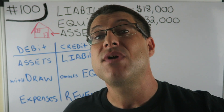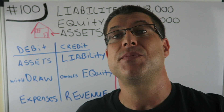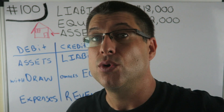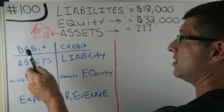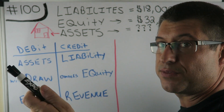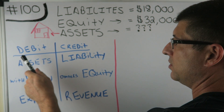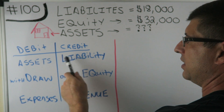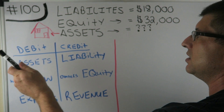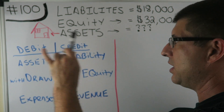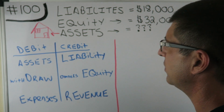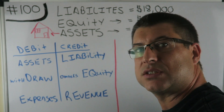But you have been writing DC Adler on your paper every day from Accounting for Beginners 99. So you've been doing this: Debit, Credit, Asset, Withdraw, and Expenses — and then Liability, Equity, Owner's Equity, and Revenue. So you've been doing DC Adler. Now this is mainly for journal entries, but DC Adler does also apply here.